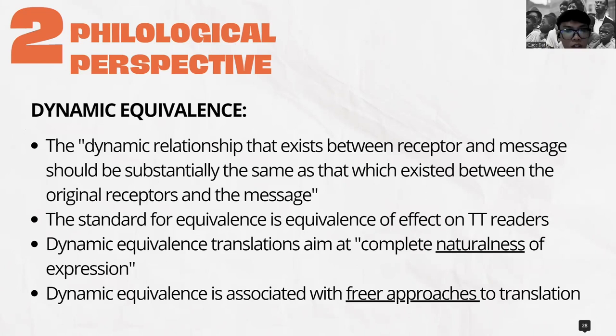We want the target text to actually look like the source text — if you lay them side by side, the language forms and structures look a lot like the source. That's formal equivalence, and this type of equivalence is associated closely with literal approaches to translation.